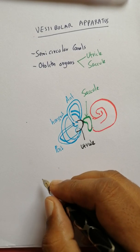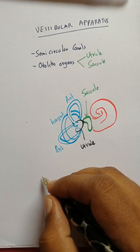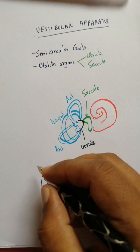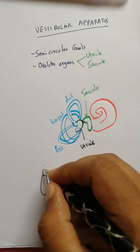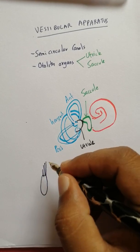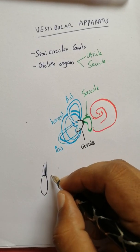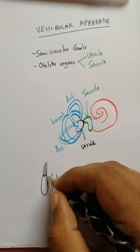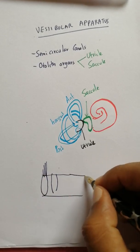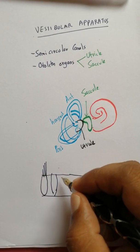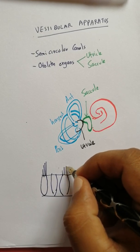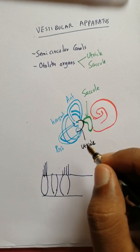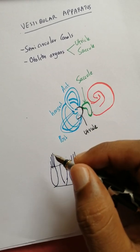The hair cells of the otolith organs have the usual kinocilium and stereocilium. The principle of how they get activated by depolarizing is almost the same, so I'm not going into that.